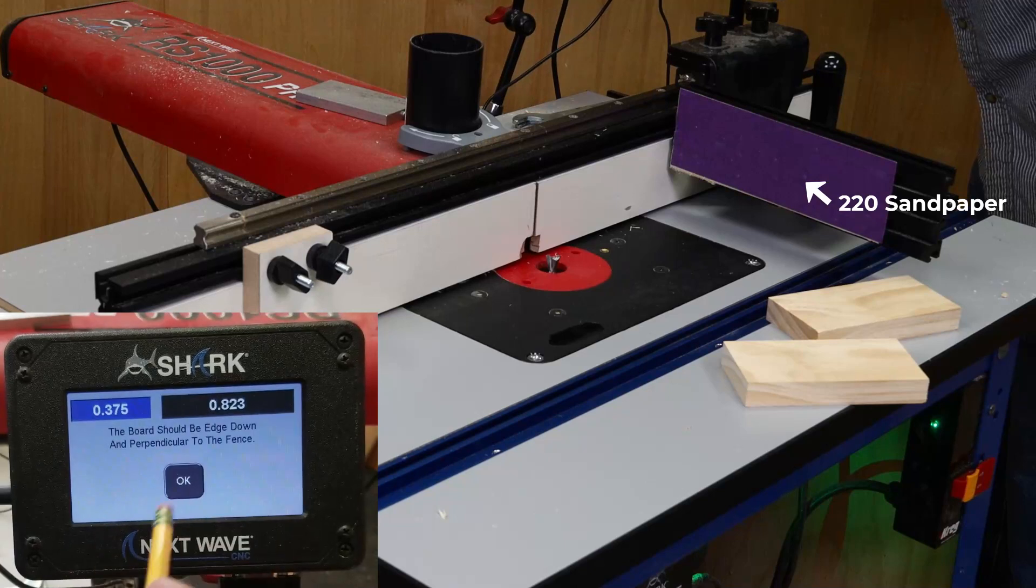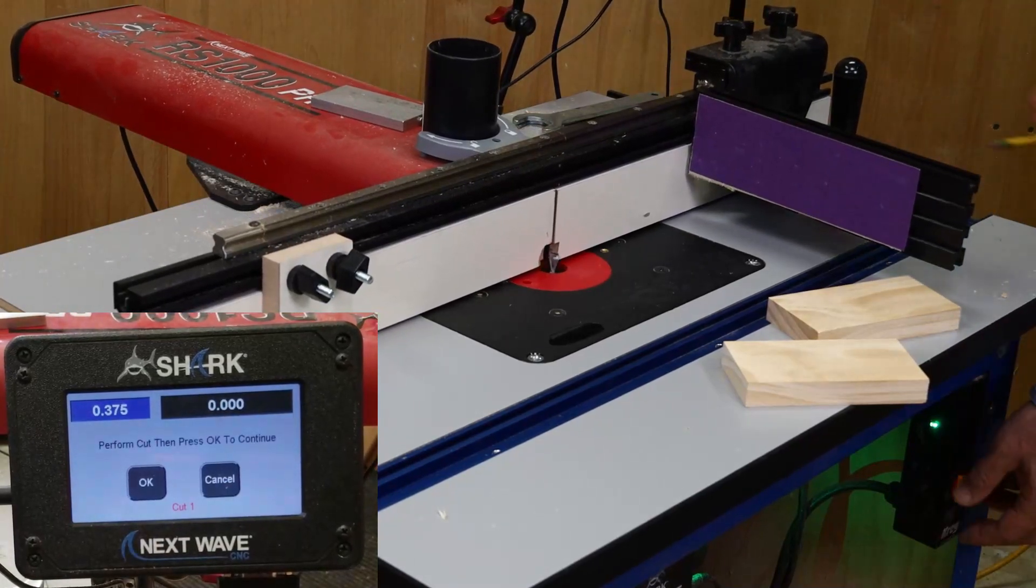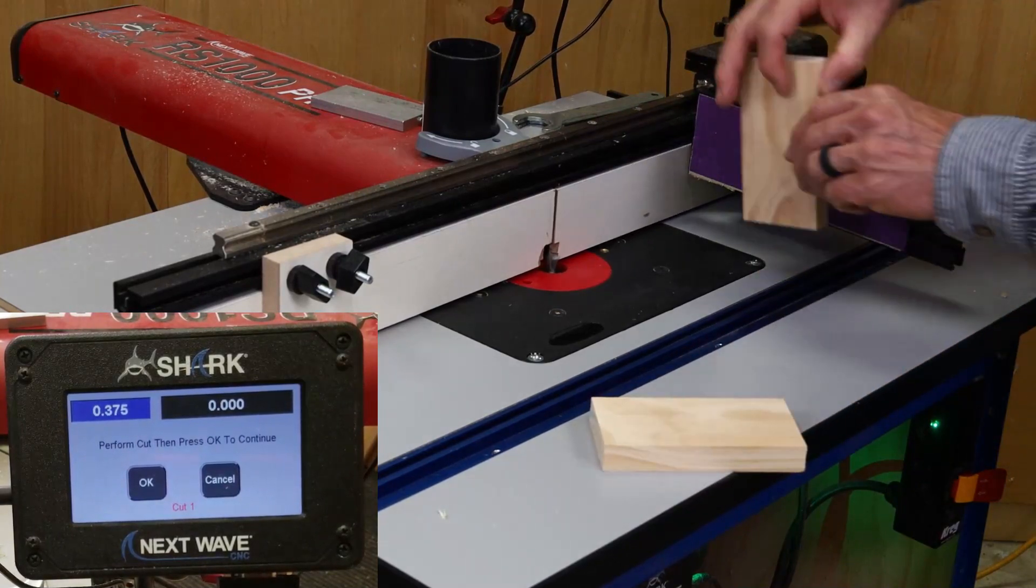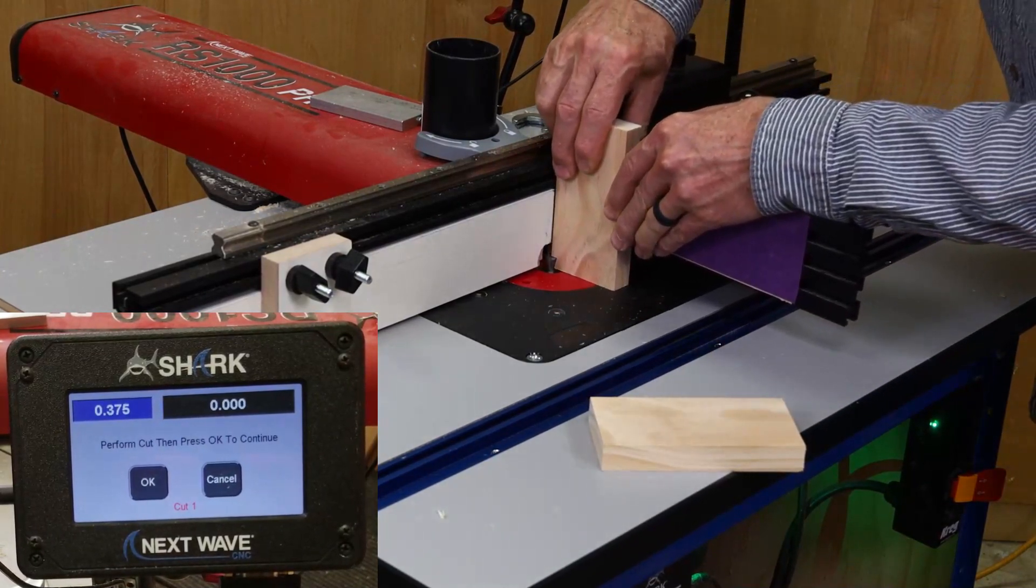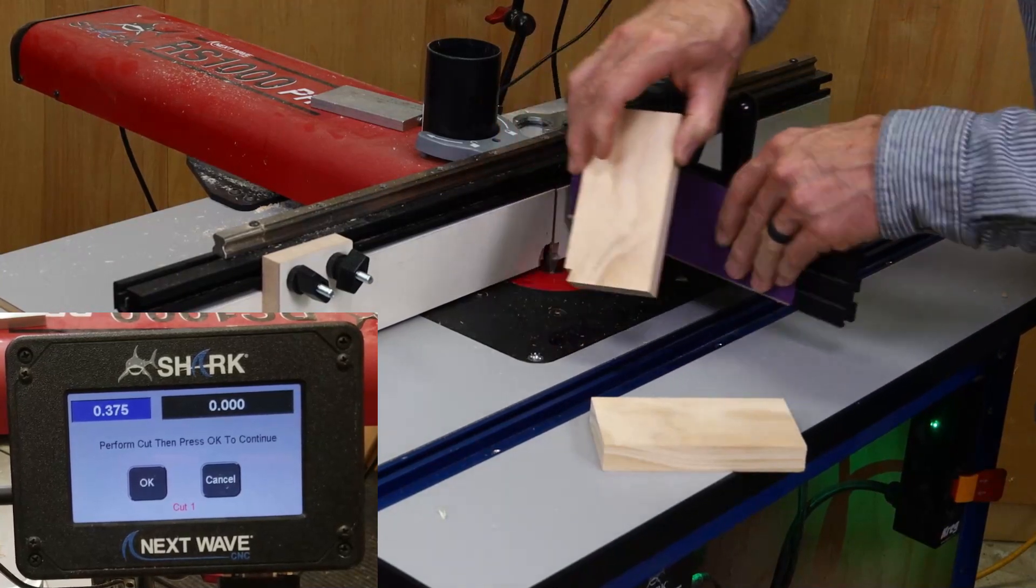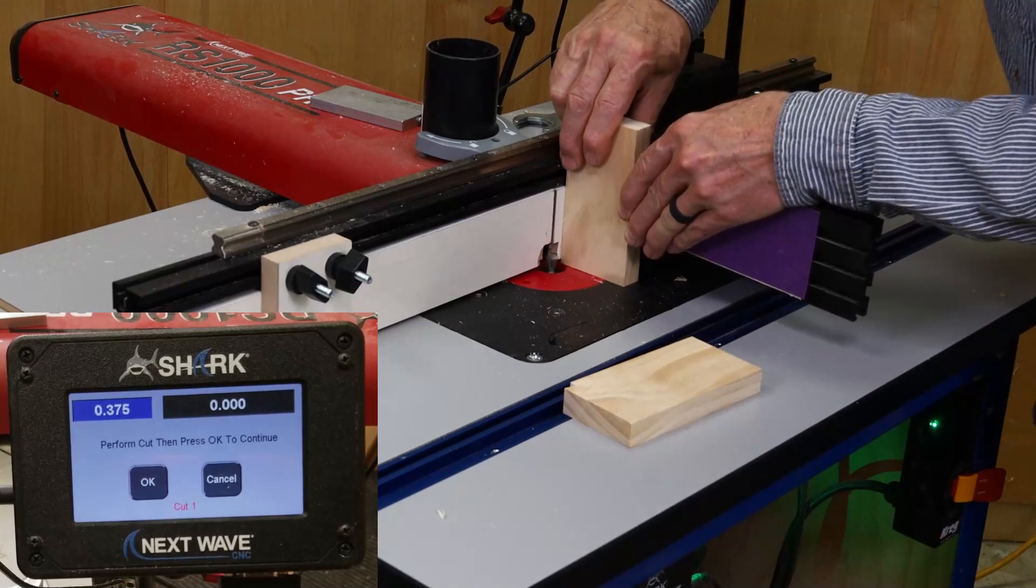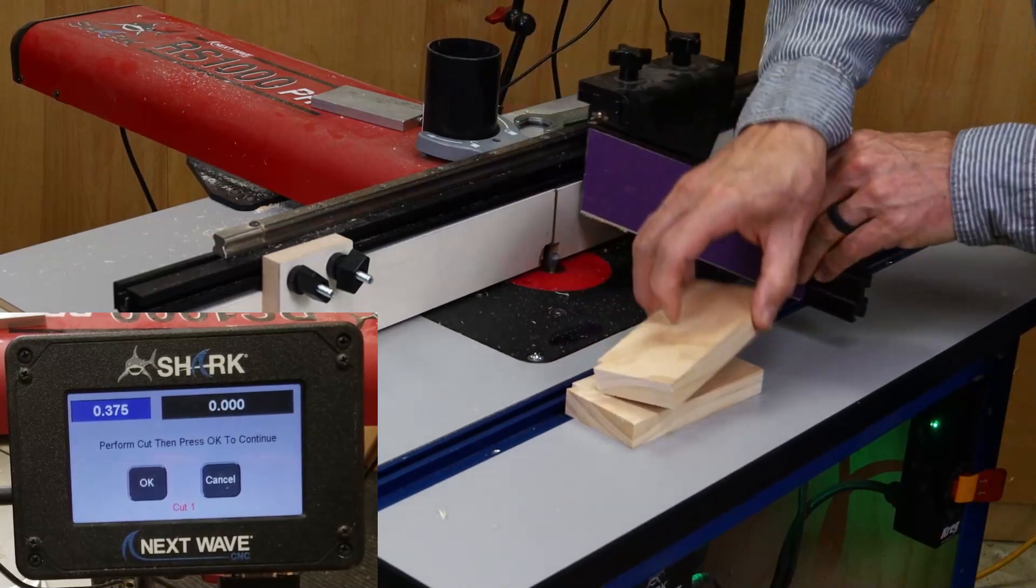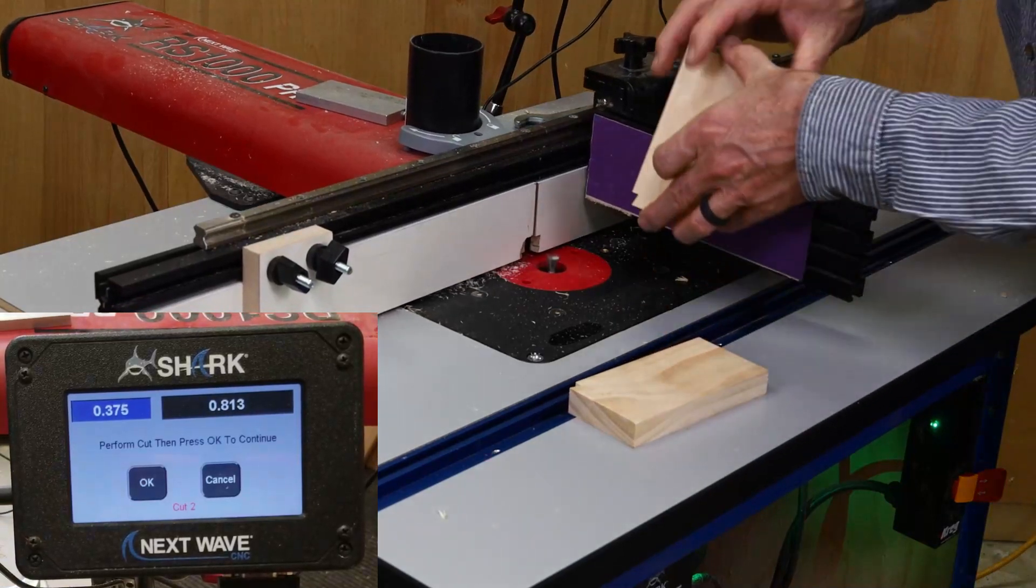Clicking through the next few screens automatically positions the fence and the bit for the first cut. Make this cut on both boards. The first cut complete, advance the fence for cut number two.